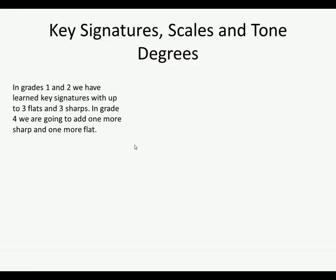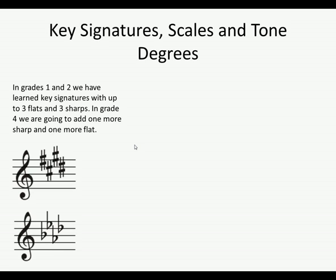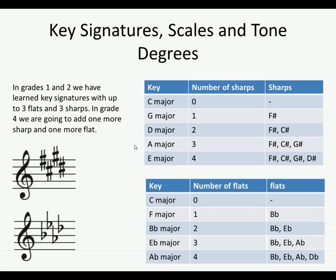In Grades 1 and 2 we learned key signatures with up to 3 flats and 3 sharps. In Grade 3 we're just going to add one more sharp and one more flat. For the sharp keys: G major has one sharp (F#), D major two sharps (F#, C#), A major three (F#, C#, G#), E major four (F#, C#, G#, D#). For the flat keys: F major has one flat (Bb), Bb major two (Bb, Eb), Eb major three (Bb, Eb, Ab), and Ab major four (Bb, Eb, Ab, Db).